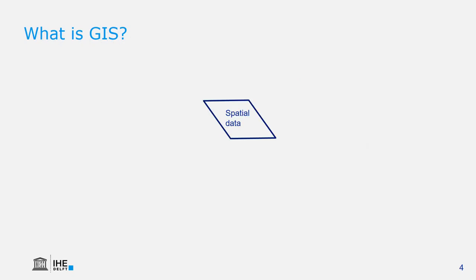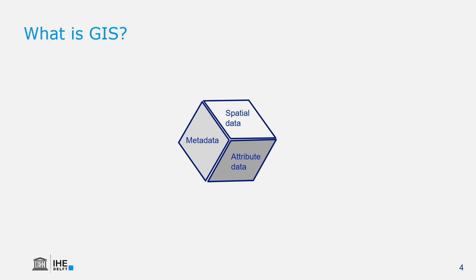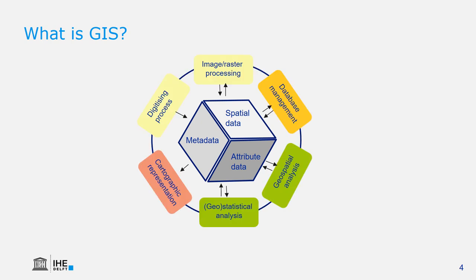Spatial data is in the center of a GIS — this is where the locations are. But only with locations we can't use it; we also need attribute data. The attributes connected to spatial data contain the information. And there's metadata — we need to know things like the units, the projection, and other data before we can really use the data. Around the spatial data there is image raster processing, database management, geospatial analysis, geostatistical analysis, cartographic representation, and digitization, all interacting with the spatial data for creation or as output.